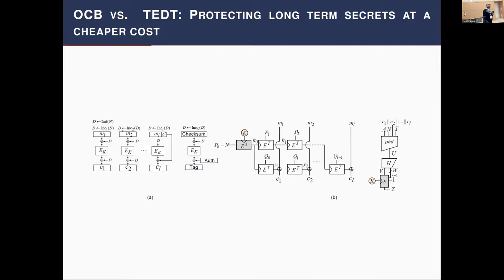Leveled implementation is a concept from side-channel protection and leakage-resilient schemes, classifying modes into two categories. On one side we have OCB, which uses a secret key everywhere — to protect against faults requires protecting all block cipher calls and all operations. In leveled implementations, security proofs only require that certain elements are heavily protected, such as one block cipher call at the beginning and end, while the rest are less protected or unprotected depending on the security goals.